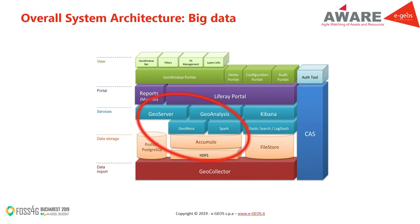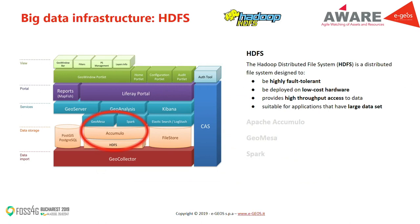From bottom to top, the technologies are HDFS, Accumulo, GeoMesa, Spark, GeoServer, and GeoAnalysis. HDFS stands for Hadoop Distributed File System — it is a distributed file system designed to be highly fault-tolerant and suitable for applications that use large datasets as we have. On top of HDFS, there is Accumulo, which is a key-value store that is highly scalable, distributed, structured, and sorted.